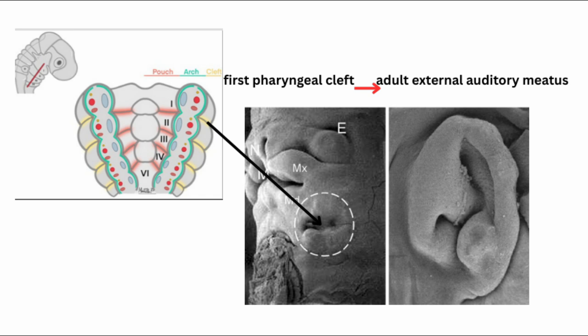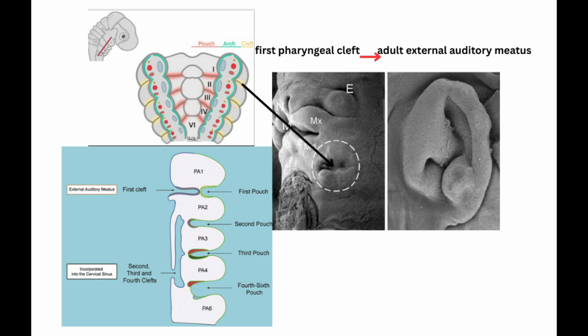The second, third, and fourth clefts organize and give rise to cervical sinuses. So to summarize the clefts: the first pharyngeal cleft forms the adult external auditory meatus, and the second, third, and fourth clefts organize and give rise to cervical sinuses.